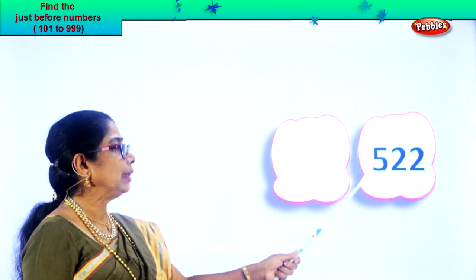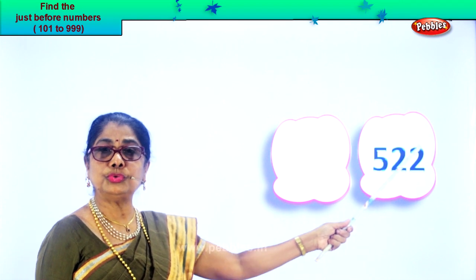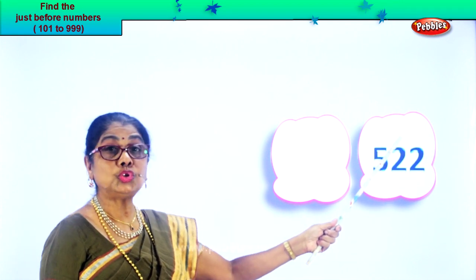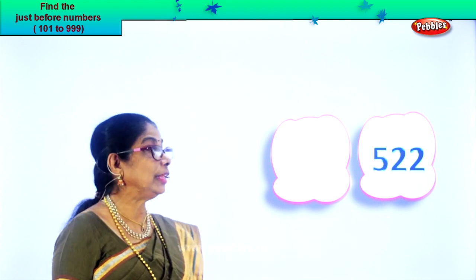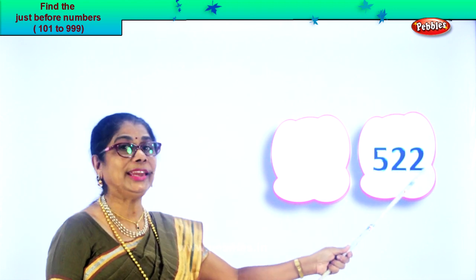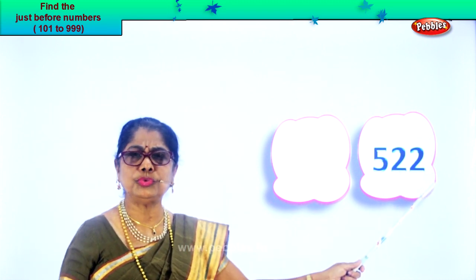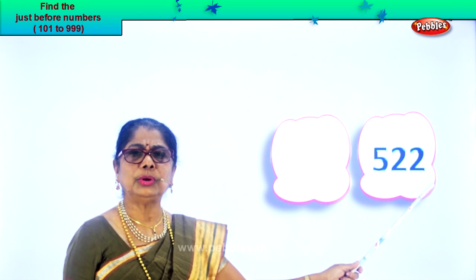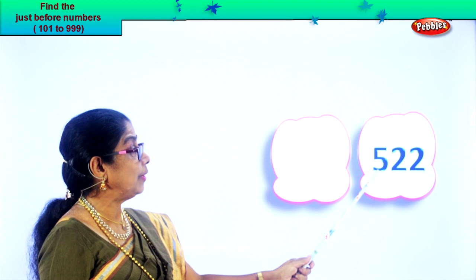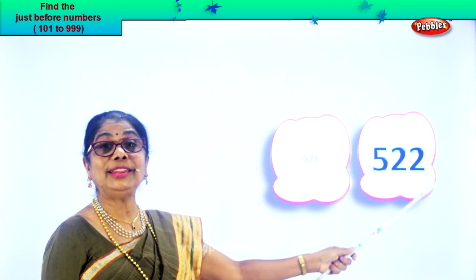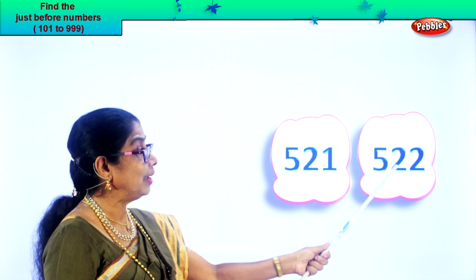Look. Let's read this number: five, two, two. Two in the ones place, two in the tens place, and five in the hundreds place. Read: five hundred and twenty-two. In the ones place you have two — from two, if you take away one, what will be left? One. So that will be five hundred and twenty-one. We write five hundred and twenty-one, five hundred and twenty-two.